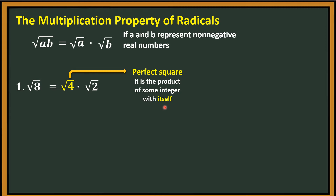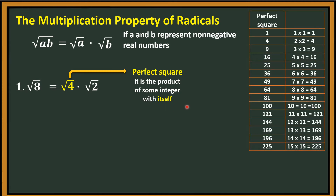Let's have an example of perfect squares. So since we have 4 here, if you're going to get the square root of 4, that is 2. Paano siyang naging perfect square? If you multiply 2 to itself, the answer is 4. Therefore the square root of 4 is 2. So we write 2, and just copy square root of 2. We will have now 2 square root of 2.